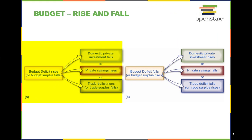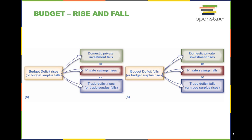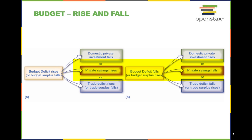The chart on the left shows the potential results when the budget deficit rises or the budget surplus falls. The chart on the right shows the potential results when the budget deficit falls or budget surplus rises. We see that a government's budget impacts three things: first, domestic private investment, which are investments by domestic companies in a country's future production capacity; second, private savings, which is based on the saving versus spending trends of a population; and lastly, the balance of imports versus exports, or the trade balance of a country.